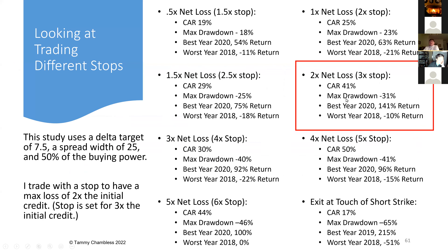Looking at different stops, the lower stops generally have a lower return. If you took it to touch, the annual return would be about the same as a 0.5 stop — around 19% and 17% respectively. I choose to trade a three-times stop, which results in a two-times net loss. The max drawdown with that stop is 31%, the worst year was minus 10%, and the best year was a 141% return.